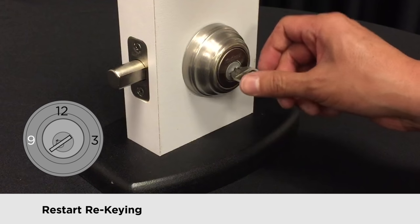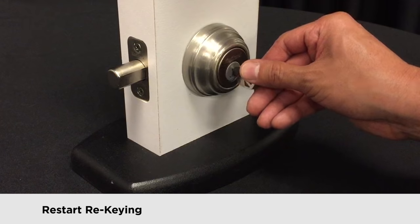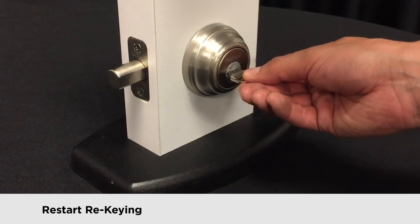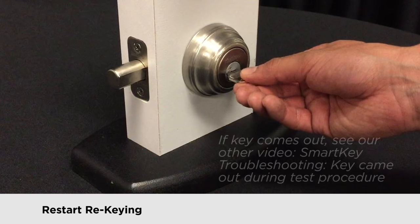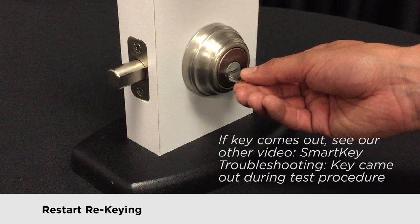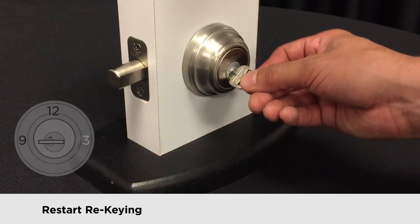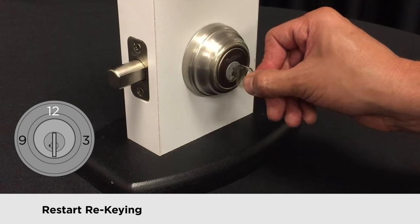Rotate it back to the 3 o'clock position for the test pull. Here, gently pull just to make sure that it doesn't come out in this position. If it does come out, we have another video for how to fix it. Rotate it to the 12 o'clock position and remove the key.